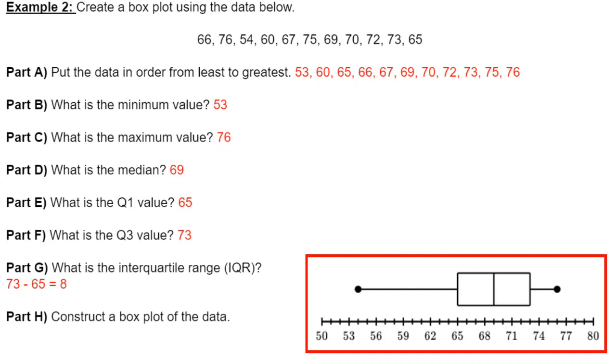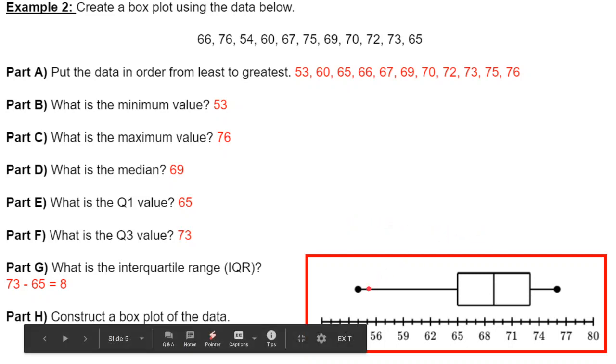And then the interquartile - well, our quarter three value was 73. Our quarter one value was 65. So you take the difference, and that is eight. And then we can draw our box plot. We have our minimum, our maximum, quarter one, quarter three, and our median.